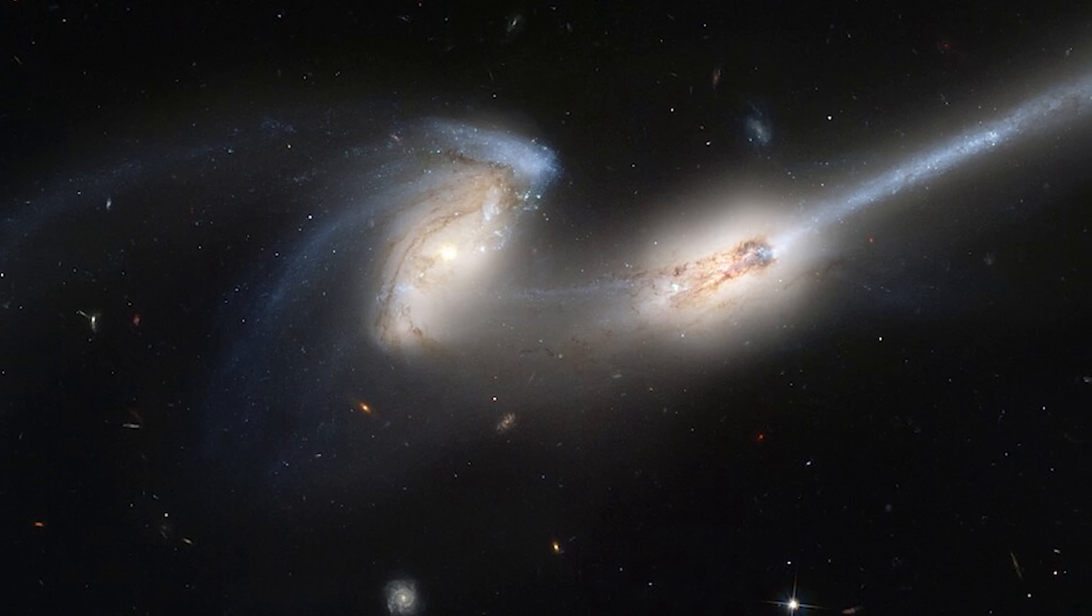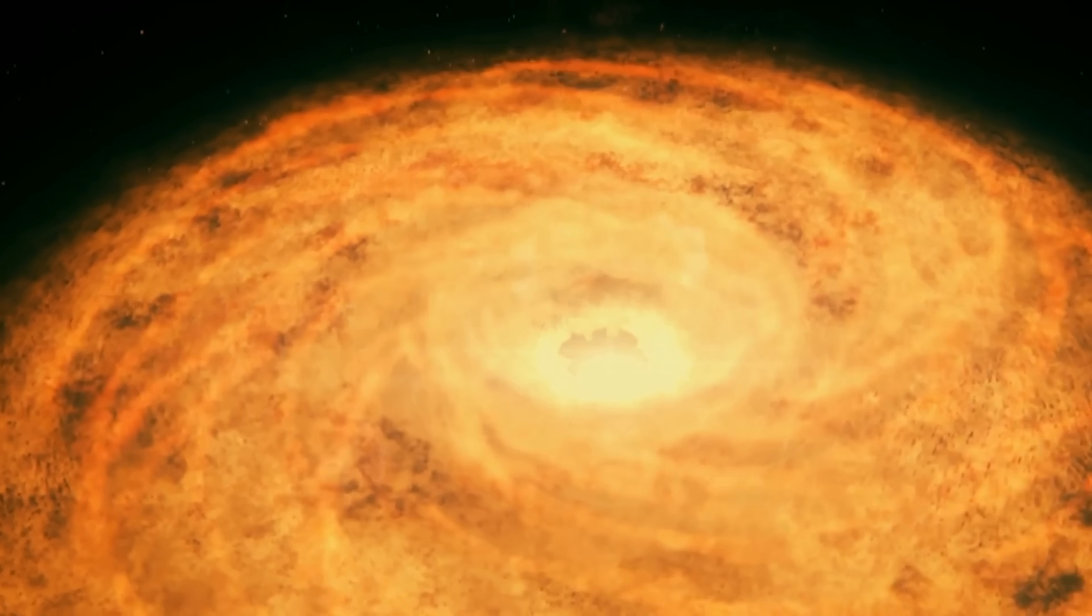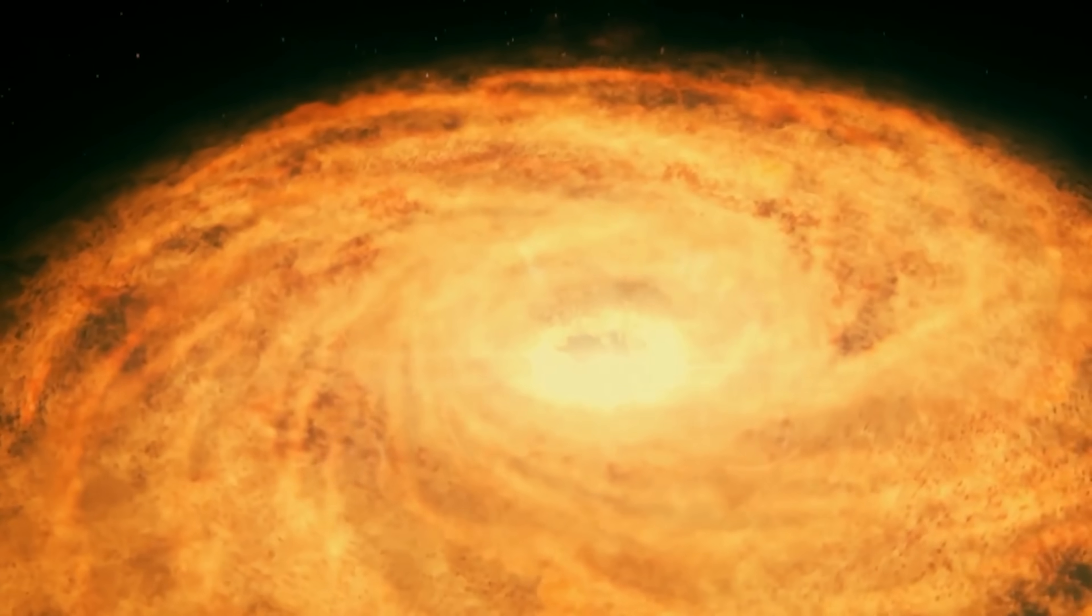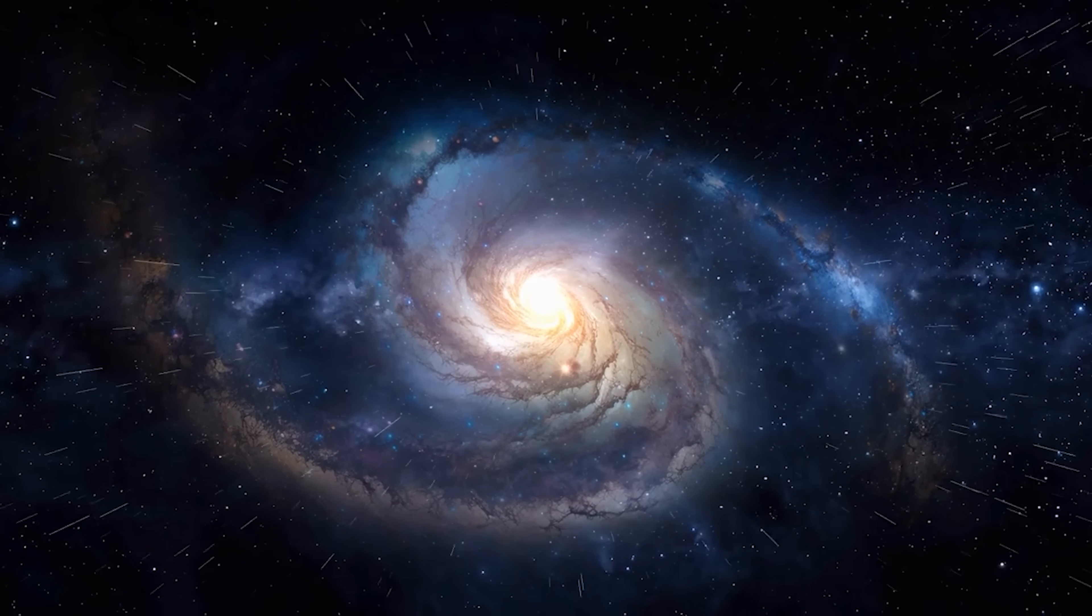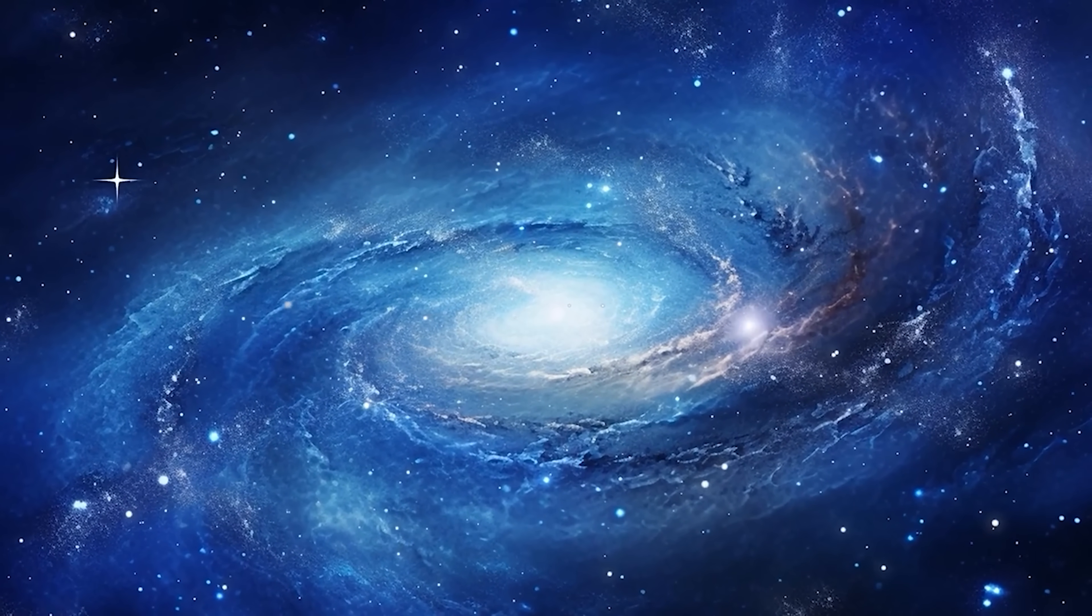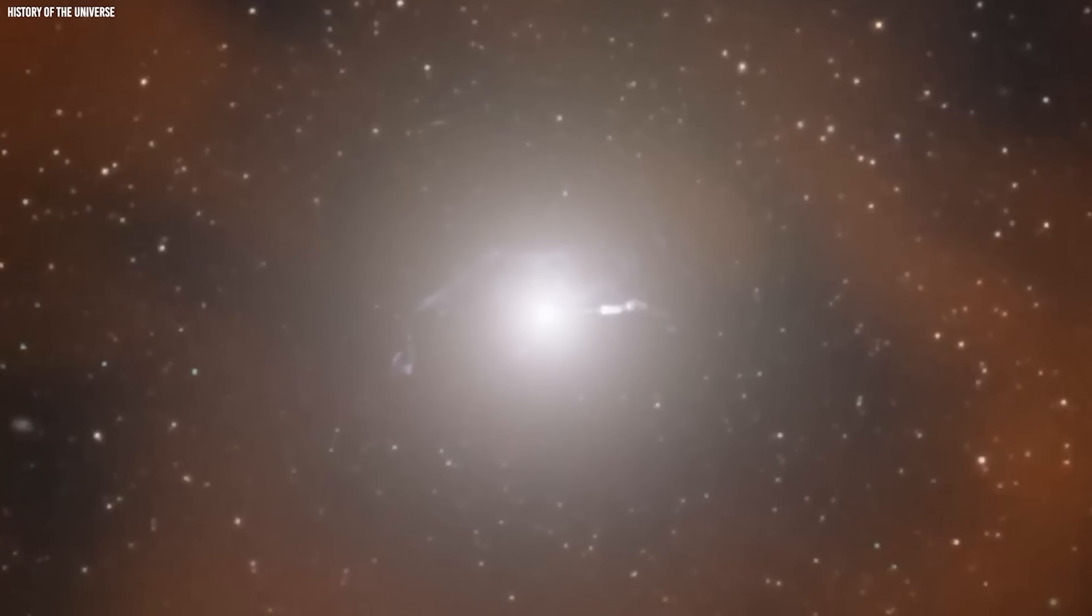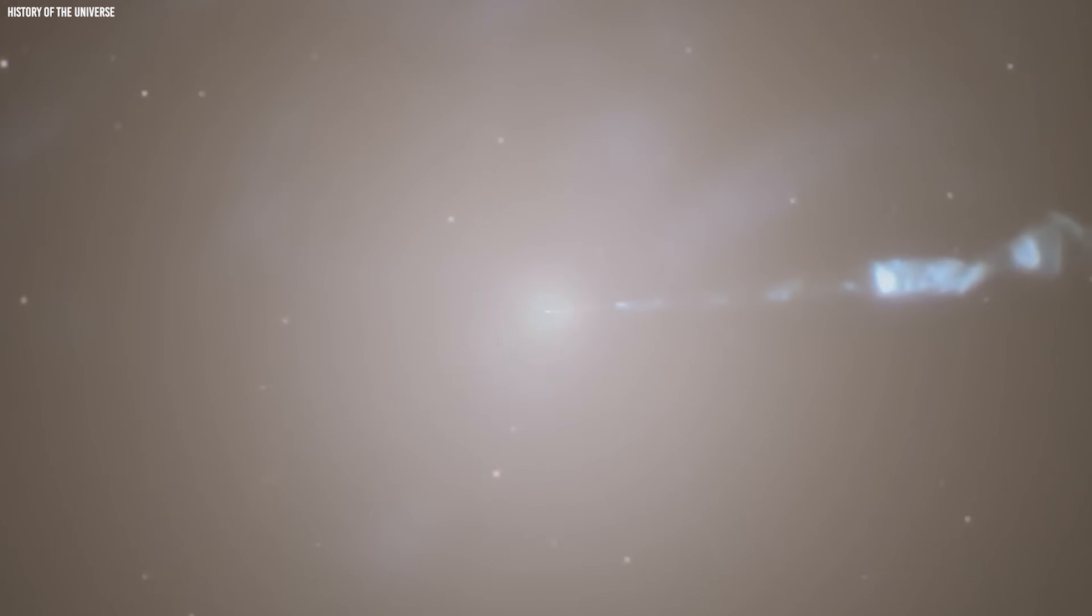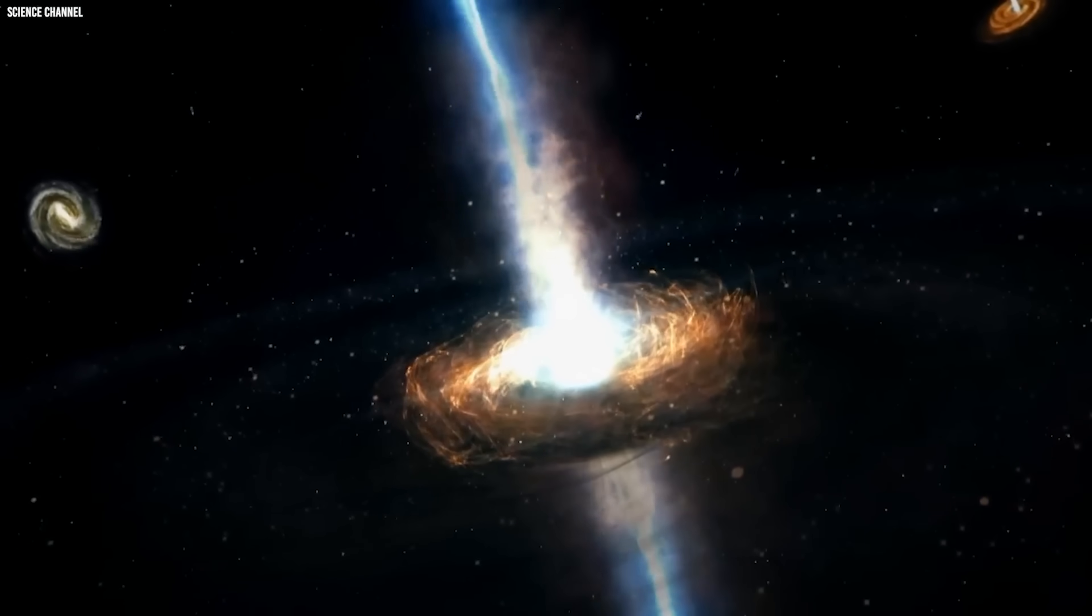It has revealed quenched galaxies that had already shut down star formation, asleep in an age when they should have been at their most active. It has also uncovered beautifully structured spiral galaxies with clearly defined arms only a few billion years after the Big Bang, structures that theory said should have taken far longer to form. All of this suggests that galaxies grew up much faster than anyone ever expected.